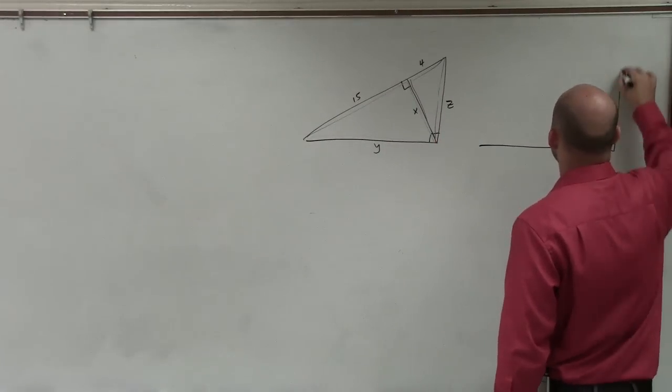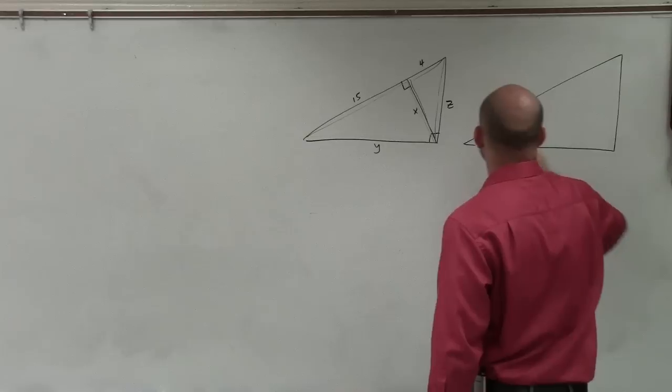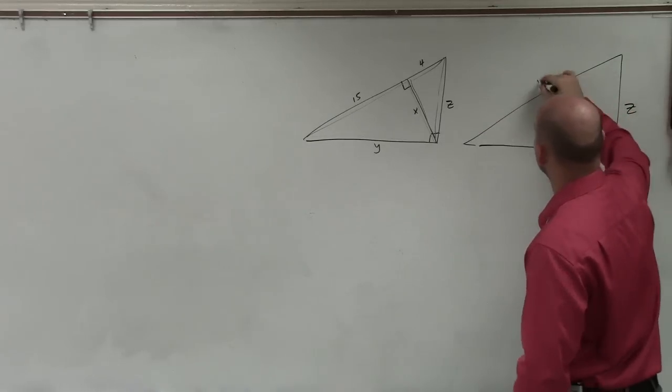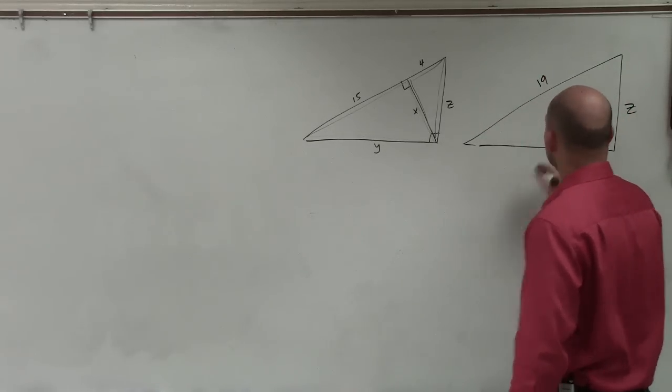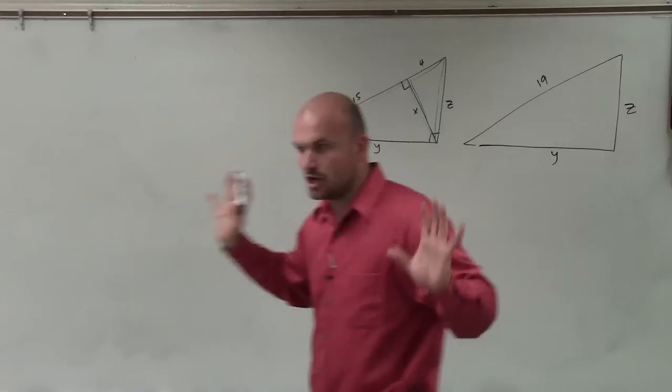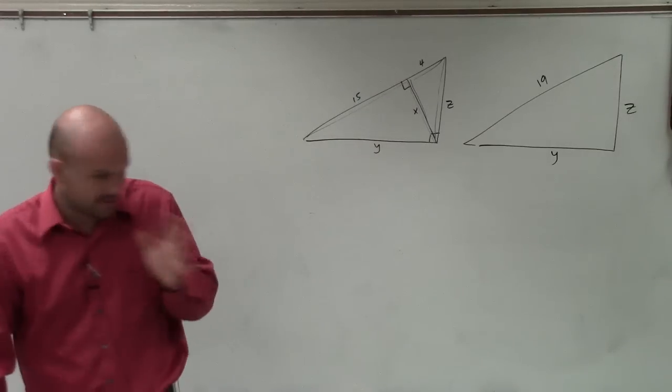I'm going to try to do my best to have them be the same. So that one is z. This whole length is 19. This length is y. Would everybody agree with me? That's the large triangle inside of there.